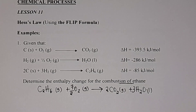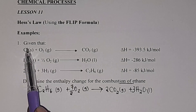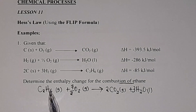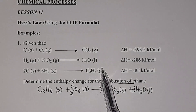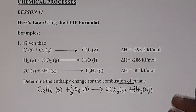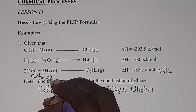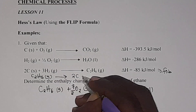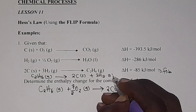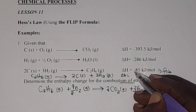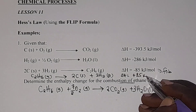This is the target equation. We are supposed to combine all the given equations to obtain this target equation. To start: I have ethane, C₂H₆ gas, but in the given equation, ethane is on the product side. So we are supposed to flip it — we put ethane as our reactant. That means we write C₂H₆ gas on the left, and on the right we get 2 carbon solid plus 3 hydrogen gas. When you flip the equation, you also flip the sign of the enthalpy change. So it was initially negative, and it flips to positive 85 kJ per mole.